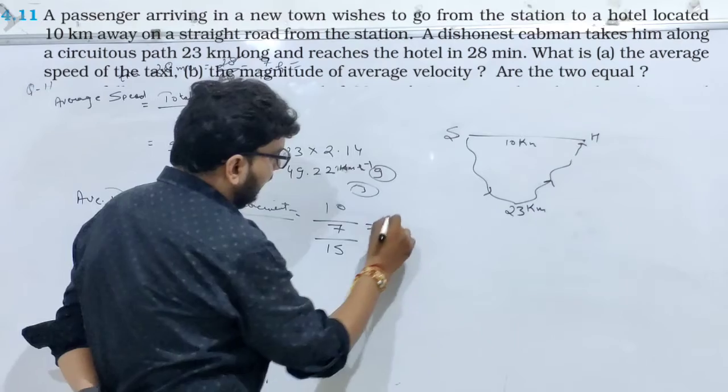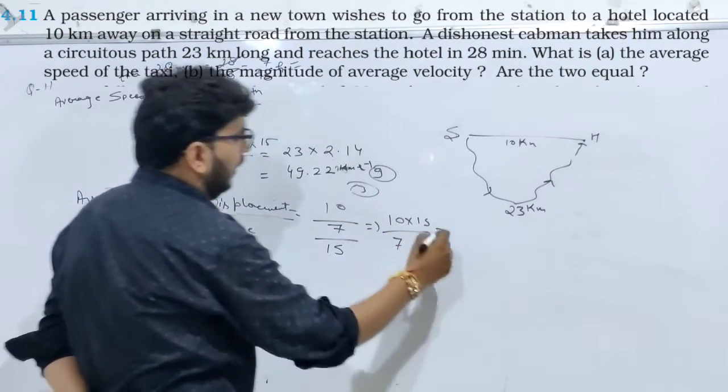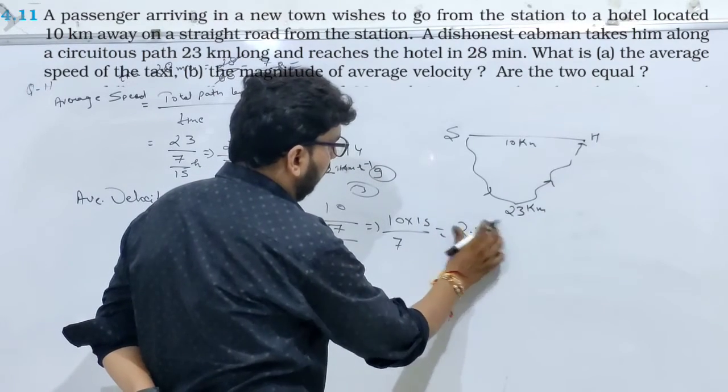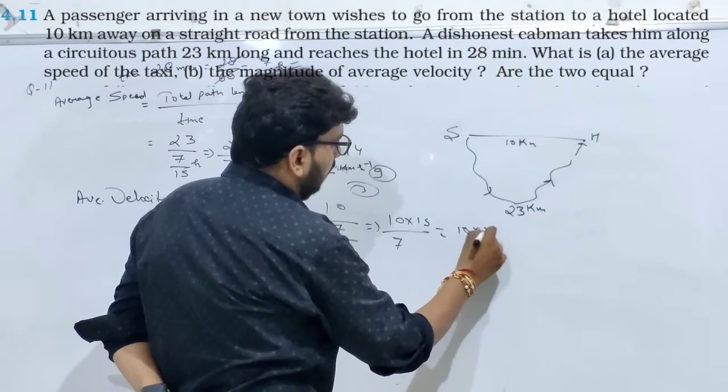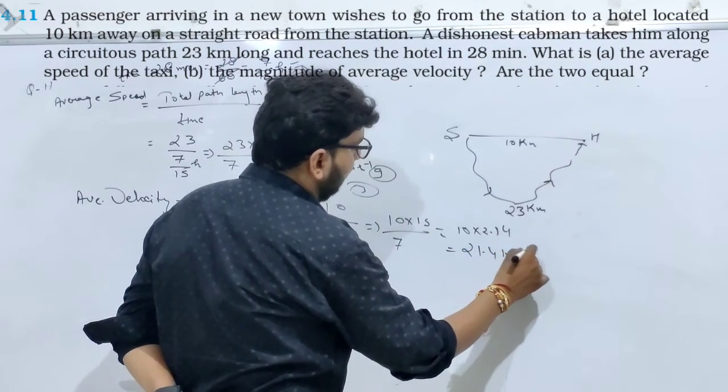तो 7 by 15, so 10 into 15 divided by 7. इसको divide किया, तो value क्या आगे, 2.14, 10 into 2.14, so it will be 21.4 kilometers per hour.